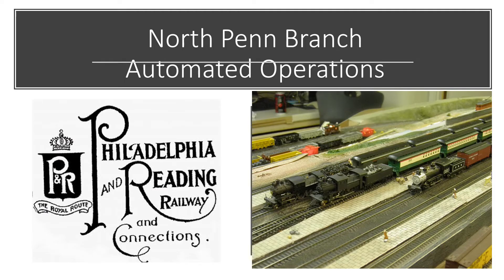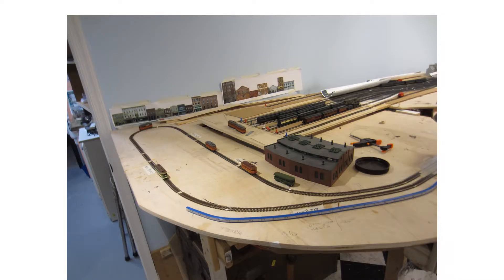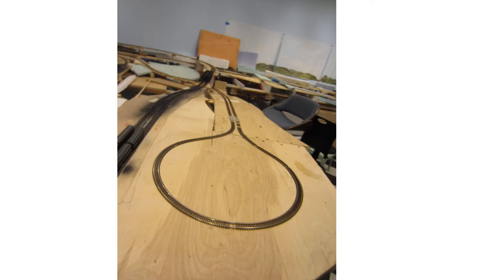My North Penn branch is a period N-scale layout set in the early 1900s. Naturally, my layout needed a trolley line, and so it has one. My trolley line is a simple folded dog bone loop. It runs from here next to the main passenger terminal to here, about 60 feet total, out and back. I wanted to have a bunch of trolleys circulating on the loop, stopping here and there for passengers. The solution is automatic block control. Digitrax can provide the block occupancy information to Loconet, and TCB can take that information from Loconet and run the trains automatically.